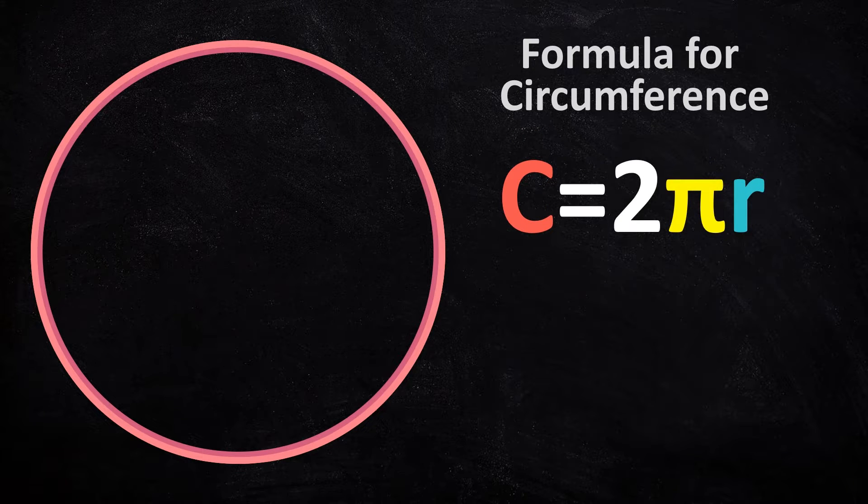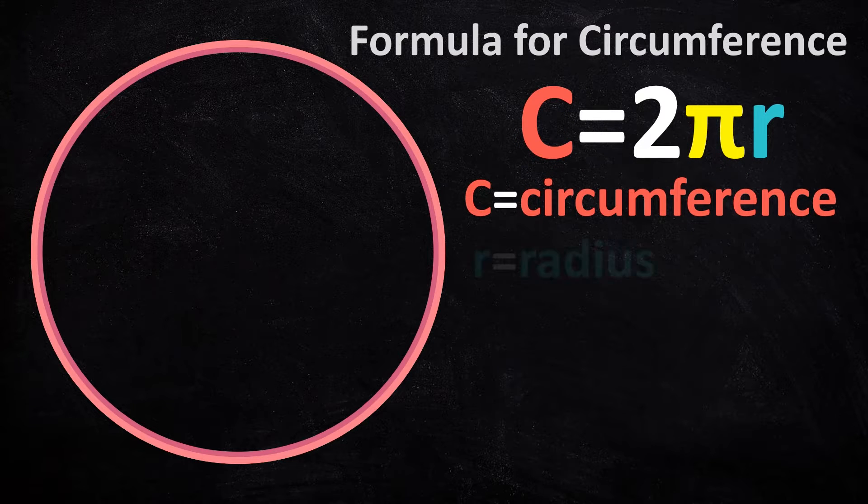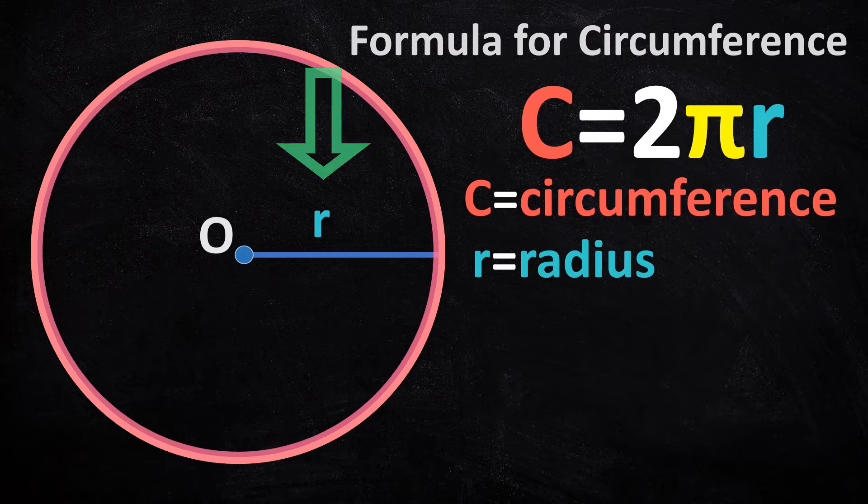In this formula, C stands for the circumference we are trying to find. r is the radius. The radius of a circle is the distance from its center to its edge. You can see the radius of this circle here.